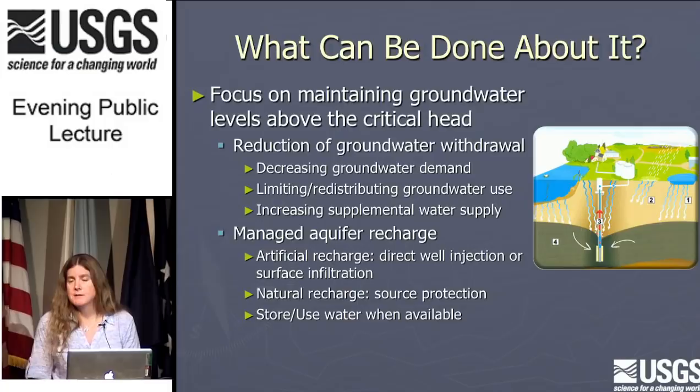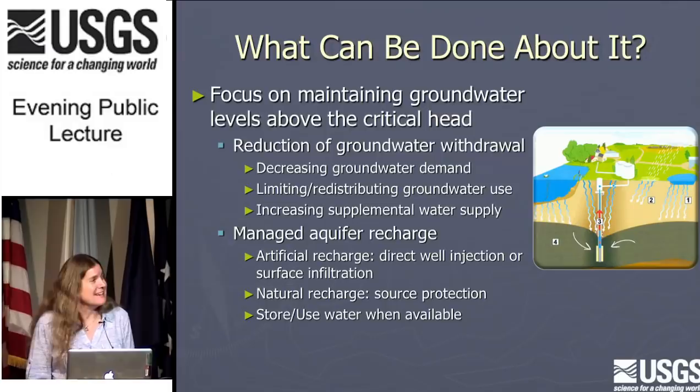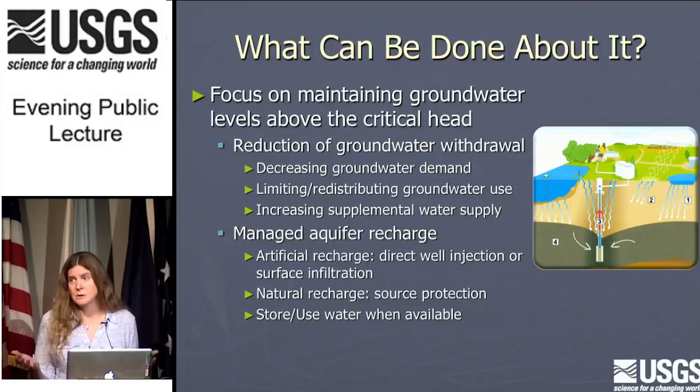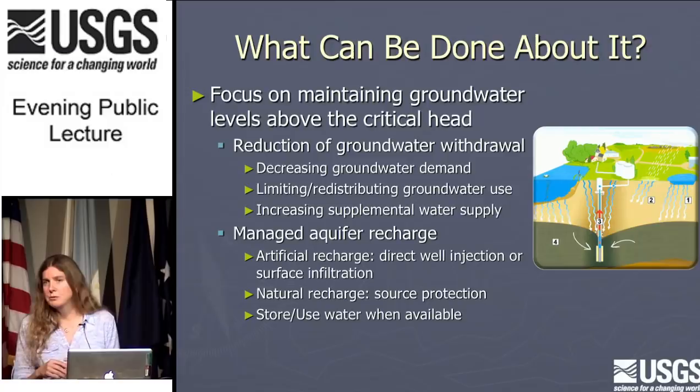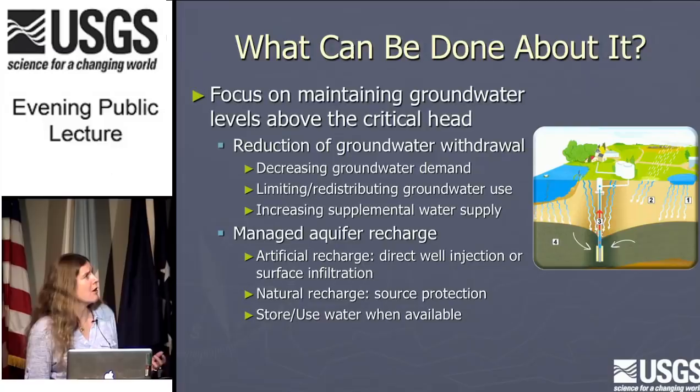So what can be done about it? From a scientific point of view, it's super easy — just stop lowering groundwater levels. If you ask a manager that, they're going to pull out their hair — it's a really hard problem to address. But that really is the secret. If you stop lowering groundwater levels, your subsidence will stop. It's going to be some combination of reducing groundwater withdrawal or increasing recharge — decrease groundwater demand, limit or redistribute groundwater use, or bring in some surface water supplies if available.